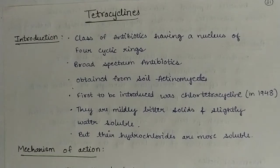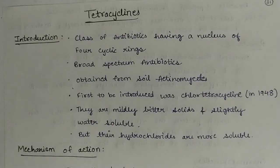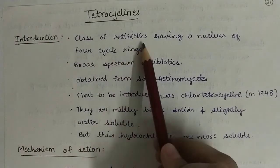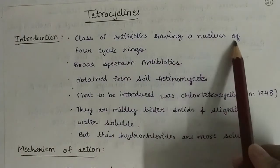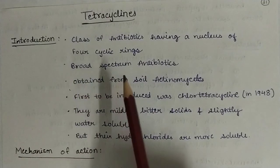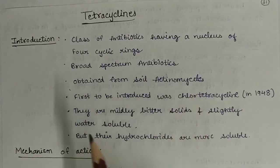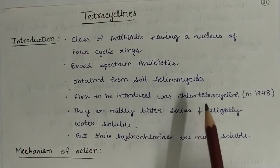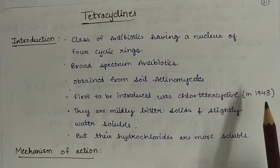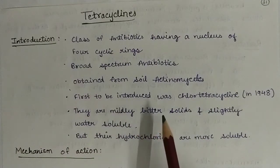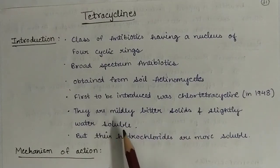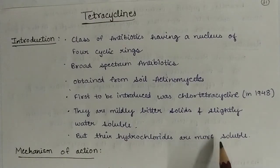Hello friends, welcome back to Shreeji Classes. In this video we are starting from antimicrobials and our first topic is tetracyclines. The tetracyclines are the class of antibiotics having a nucleus of four cyclic rings. They are broad spectrum antibiotics, obtained from soil actinomycetes. The first to be introduced was chlorotetracycline in 1948. They are mildly bitter solids and slightly water soluble, but their hydrochlorides are more water soluble.